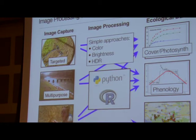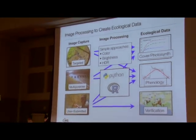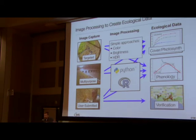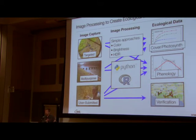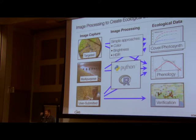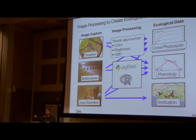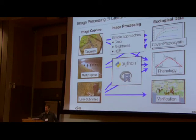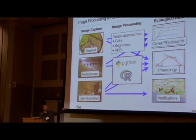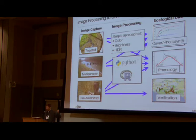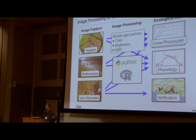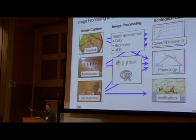I want to talk about the types of images we collect. We've got targeted images — an ecologist goes out and takes a specific picture of a plot or some trees, or we have cameras stationed in the forest repeatedly taking pictures of a tree going through a blooming event. Then there are multi-purpose images capturing ecological content secondarily — of roadway conditions or a schoolyard where there happens to be a tree or some grass. We can take what we're learning from targeted images and apply it to these secondary images of ecological importance.